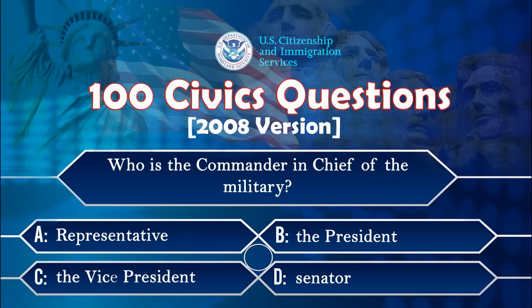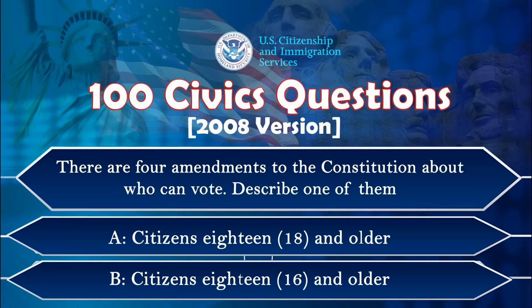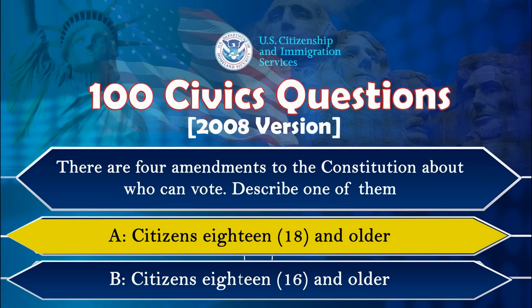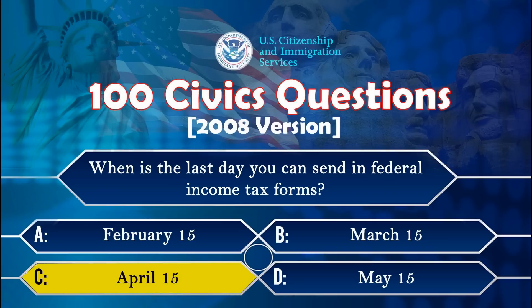Who is the commander-in-chief of the military? There are four amendments to the Constitution about who can vote. Describe one of them. Citizens 18 and older. When is the last day you can send in federal income tax forms? April 15th.